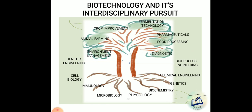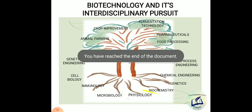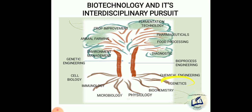Now we will discuss the interdisciplinary pursuit of biotechnology. If we consider biotechnology as a tree, then the roots of that tree are cell biology, immunology, microbiology, physiology, biochemistry, genetics, and chemical engineering. These particular subjects are the roots of biotechnology. The stems are genetic engineering and bioprocess engineering.